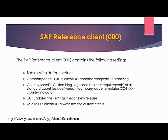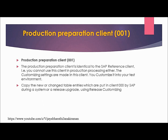As a result, client 000 always has the current status. Client 001, also called the production preparation client, is identical to the SAP reference client. Whenever there is an upgrade for client 000, the changes are copied to client 001 using release customizing. Client 001 is then copied into your test environment — that is, development sandbox — and later customized in the development client to suit your business requirements.